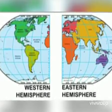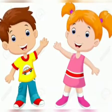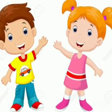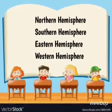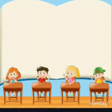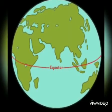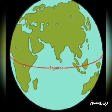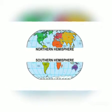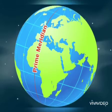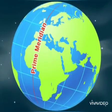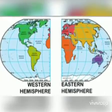Mashallah. Today we have learnt the four hemispheres. Which are they? Northern Hemisphere, Southern Hemisphere, Eastern Hemisphere and Western Hemisphere. Equator divides Earth horizontally into two equal halves — Northern Hemisphere and Southern Hemisphere. Prime Meridian divides Earth vertically into two equal halves — Eastern Hemisphere and Western Hemisphere.